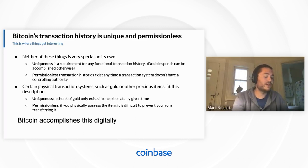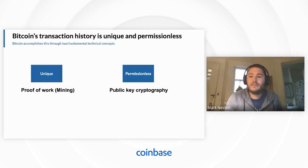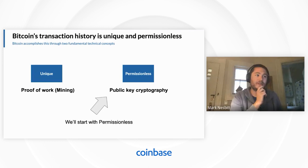This talk is meant to provide some of the technical foundations, and now we're hopefully motivated to understand why this matters. Here's how this is done: uniqueness is achieved with proof of work, or mining, and the permissionless aspect is done through public key cryptography. We're going to talk about the permissionless nature and public key cryptography first.